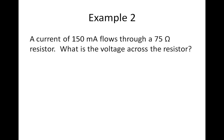In example two, a current of 150 milliamps flows through a 75 ohm resistor. What is the voltage across the resistor? Step one is the data list. I'm asked to find voltage. I know my current in milliamps, so dividing by 1000 gives 0.150 amps. My resistance is 75 ohms.